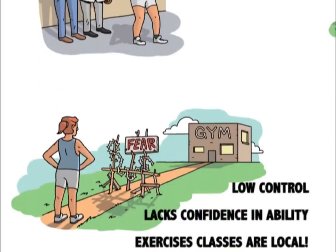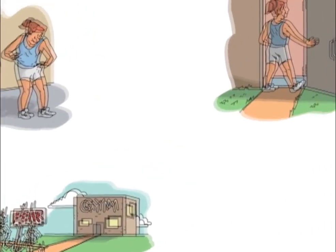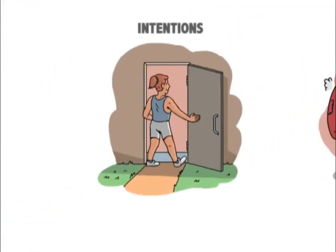Sharon also has low perceptions of behavioural control, with little confidence in her ability to exercise and feels exhausted. This is likely to serve as a barrier for her, at least initially, as well as the fact that she has concerns about displaying her body in public. On a positive note, the exercise classes take place in the local neighbourhood, they are free, and can be fitted in and around work, which should encourage a sense of control. Overall, Sharon's intentions to attend the exercise classes are likely to be weak, but positive.